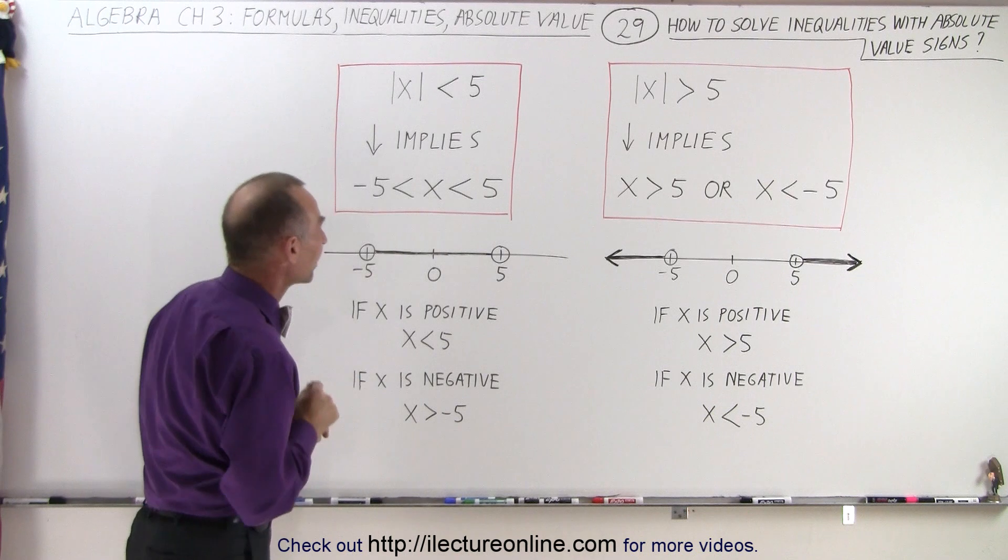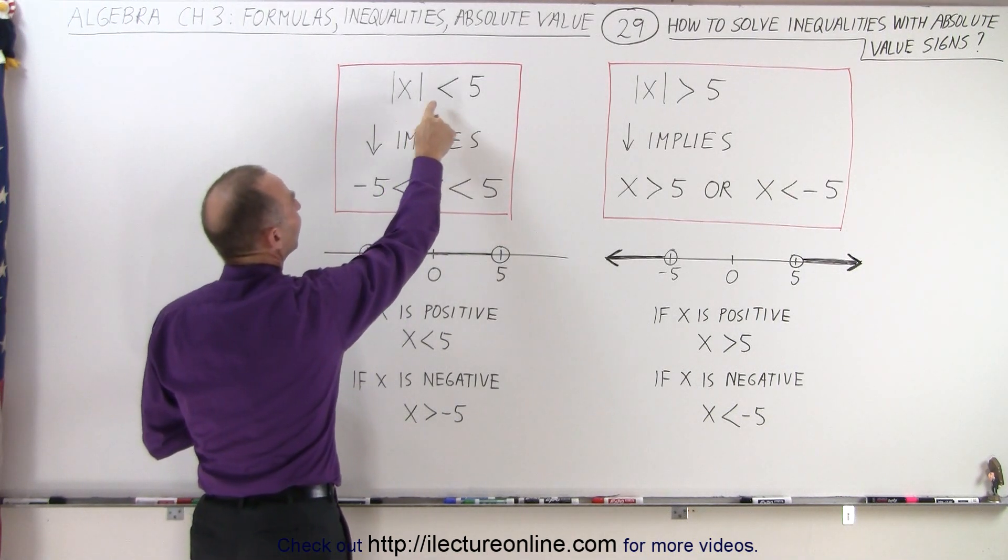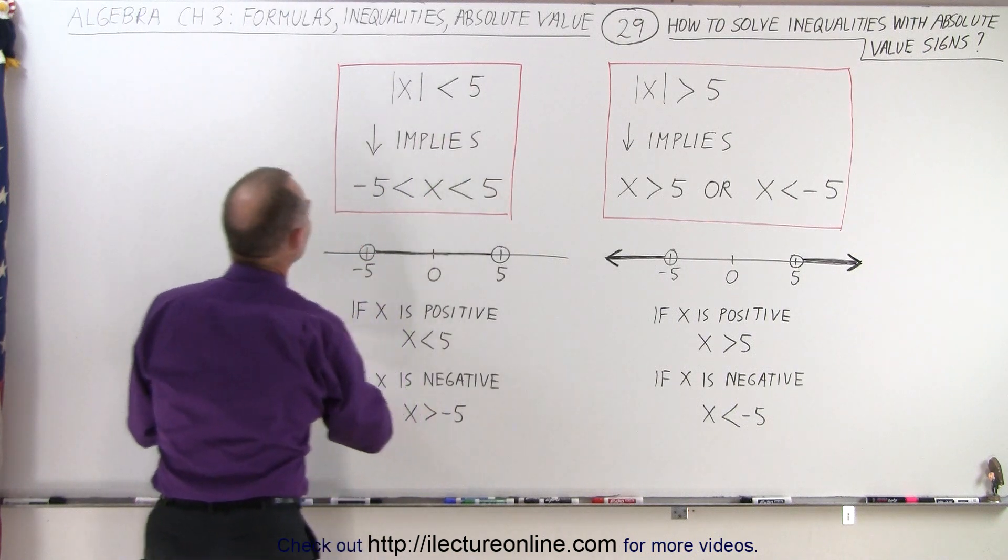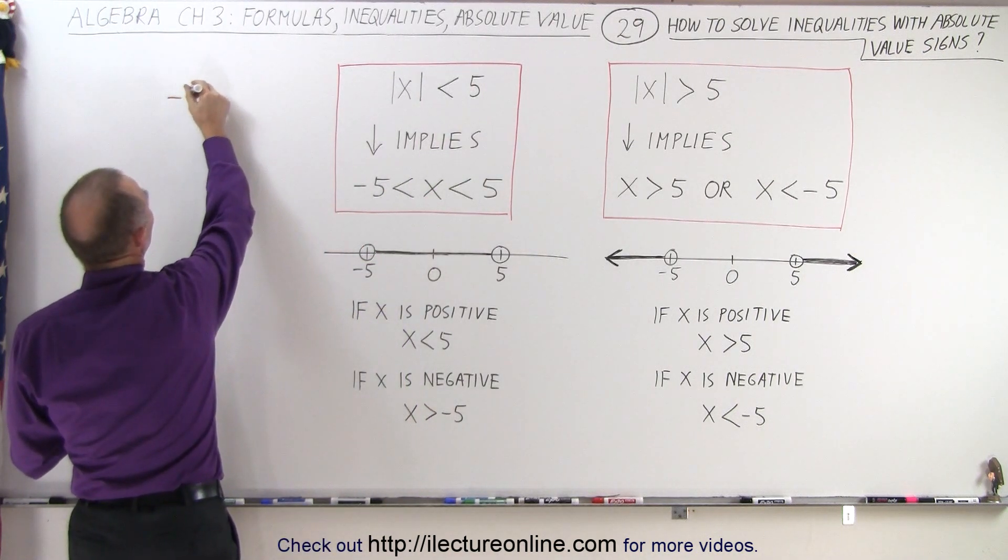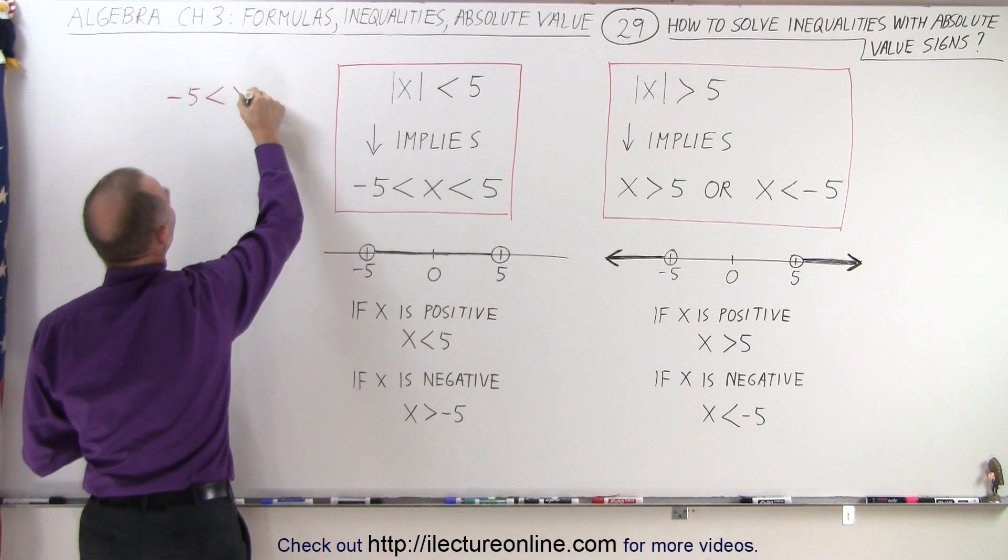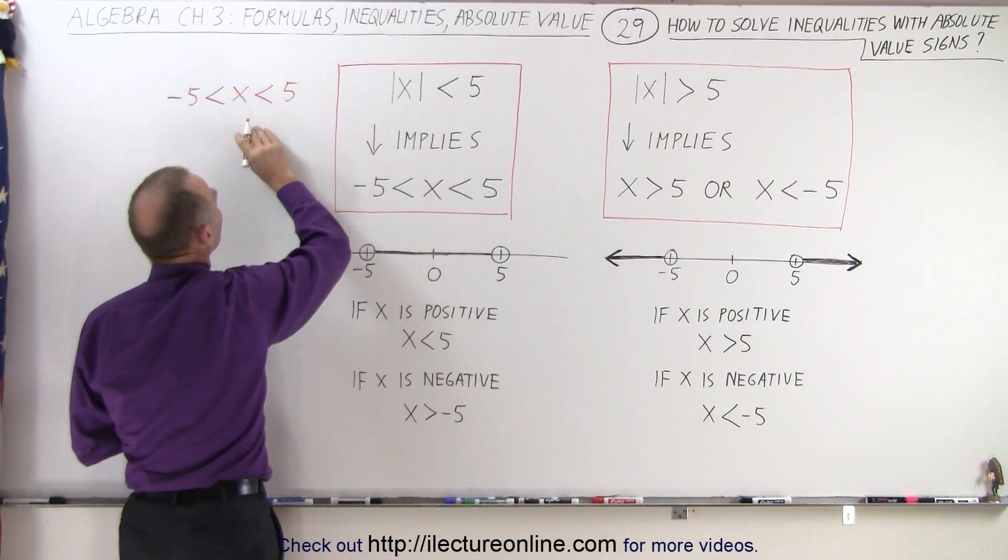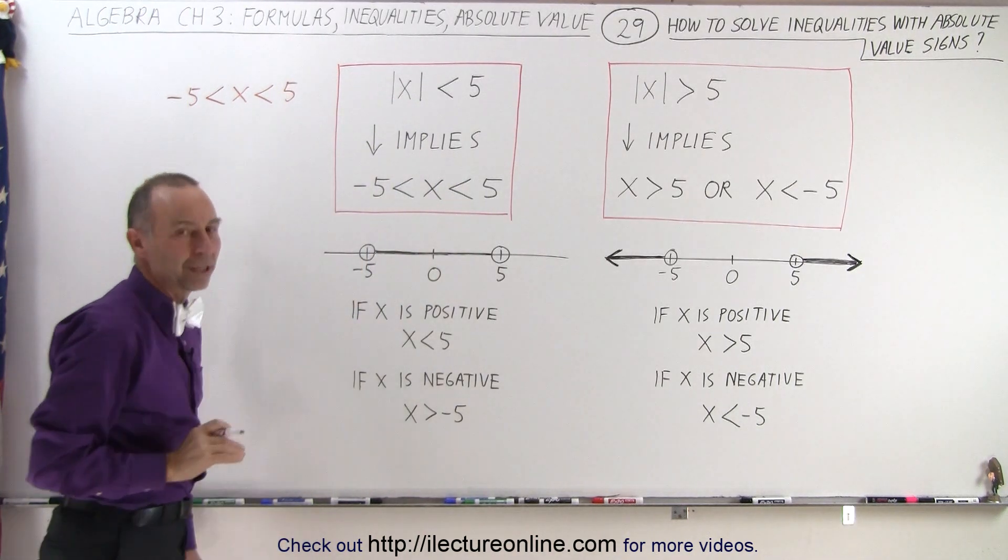So what she did was the following. She looked at this and said, if the absolute value of x is less than 5, then you can write negative 5, and then keep the inequality symbol in the same direction, is less than x, which is then less than the positive 5. And so that's exactly what we have over here.